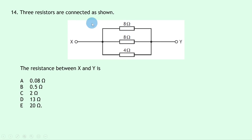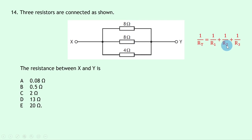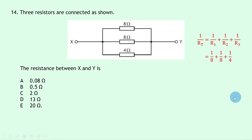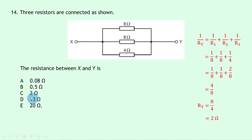Question 14: three resistors — two 8 Ω and one 4 Ω — are connected in parallel. Using 1/RT = 1/8 + 1/8 + 1/4, converting to a common denominator of 8 gives 1/8 + 1/8 + 2/8 = 4/8. So RT = 8/4 = 2 Ω. The answer is C.